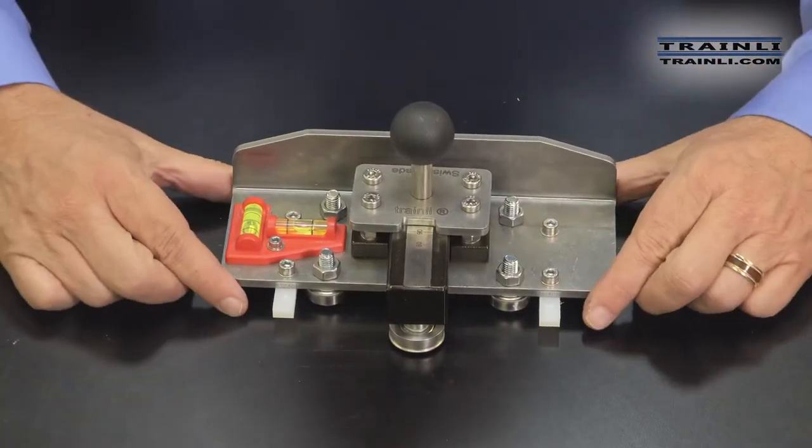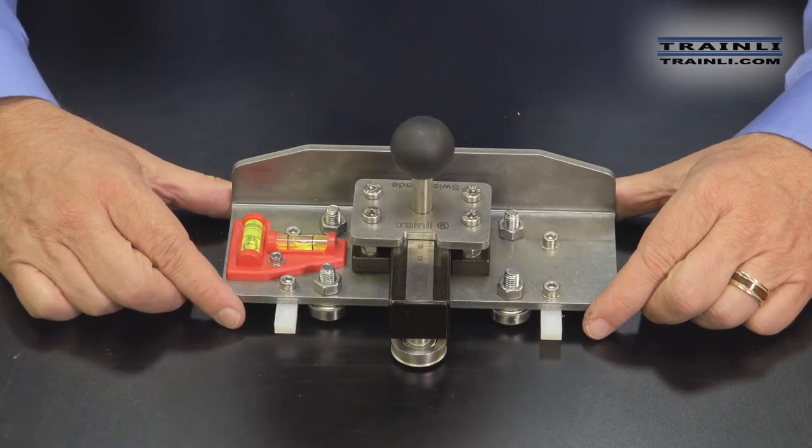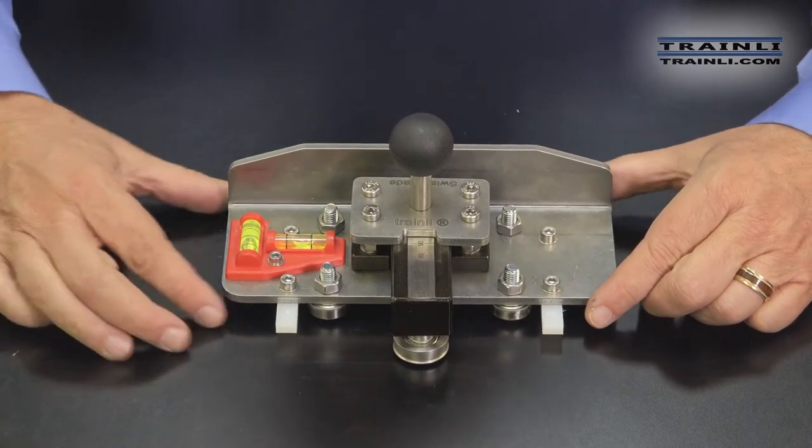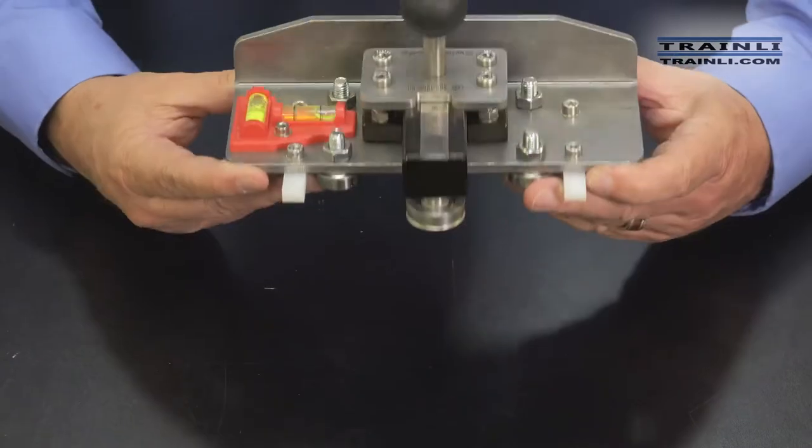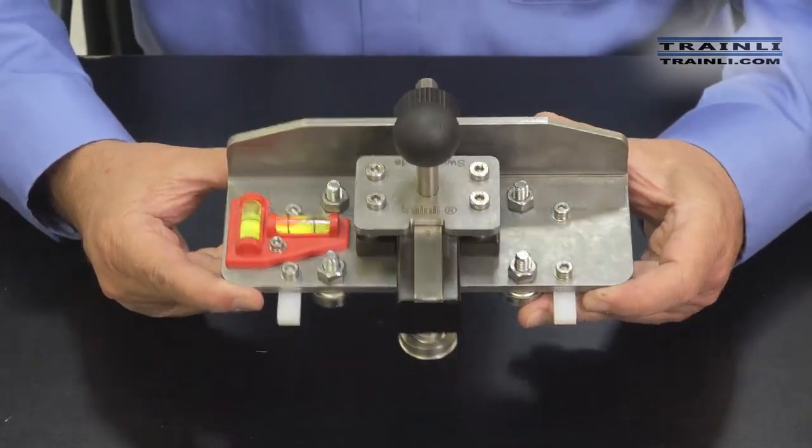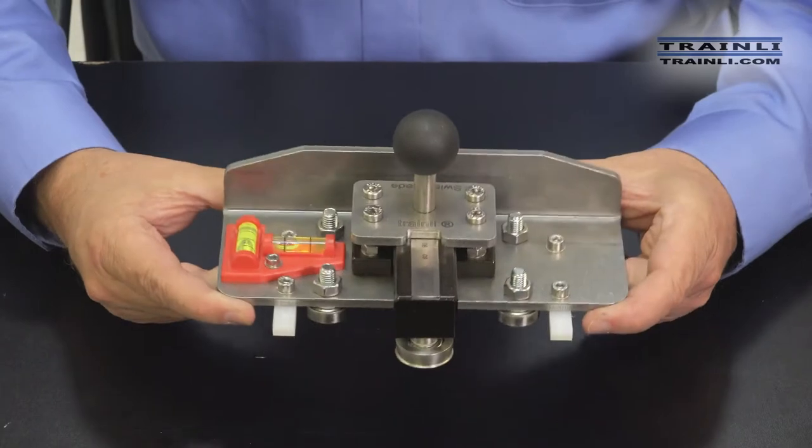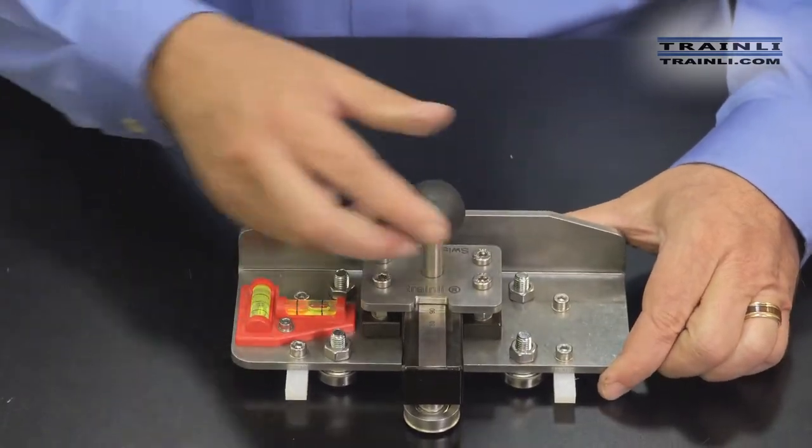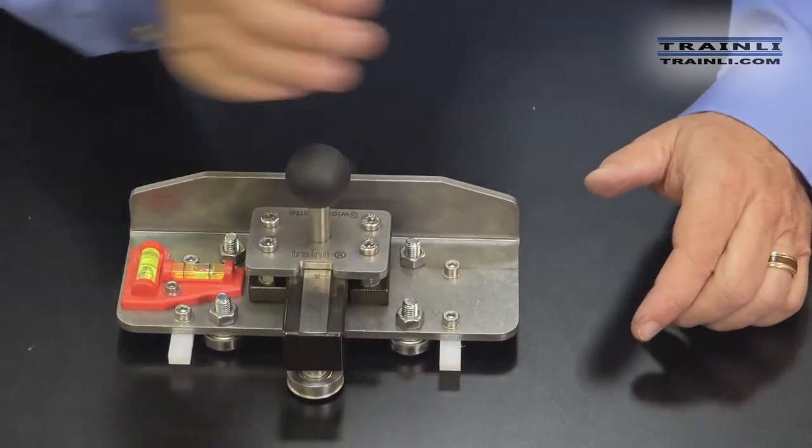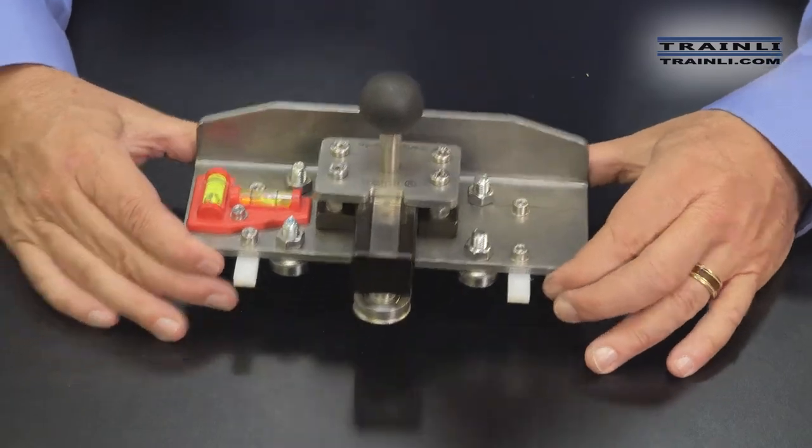Let's take a little bit closer look at this dual railbender. It comes with the two levels, so you can go ahead and keep track of your side-to-side on your track, as well as your grade up and down. This is the handle that you use to slide it back and forth across the track, up and down the rails as you're bending it.